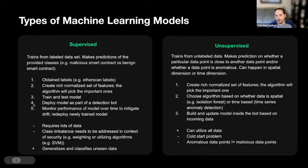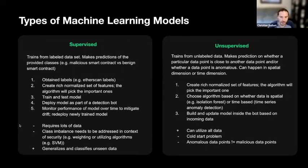The big difference with unsupervised learning is that it trains from unlabeled data. If you look at blockchain, we have a ton of unlabeled data. What you can then do is use that for clustering or making anomaly predictions.